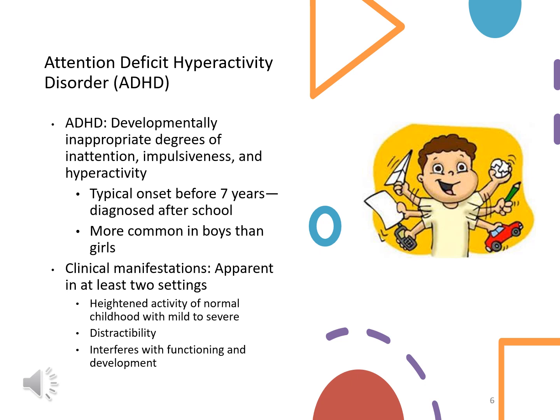What's important to remember about ADHD is the term 'developmentally inappropriate degrees,' because all kids have some level of inattention, impulsivity, and hyperactivity. You have to see if it's completely over the top compared to the rest of the classroom, compared to their brothers and sisters, and also developmentally — where are they at, what is expected of them at their age, what is their capacity of attention?